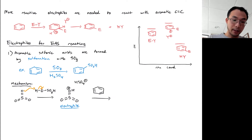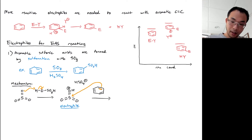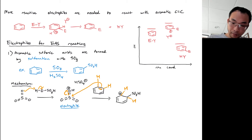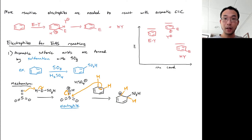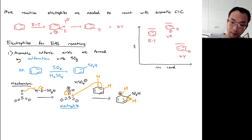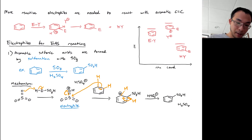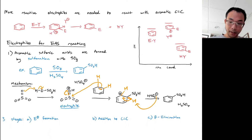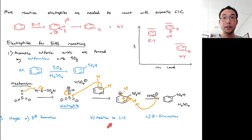Once we have the electrophile, it reacts with the nucleophilic benzene: the pi bond attacks, pushing electron density up to the protonated oxygen of the sulfur trioxide. This gives the arinium intermediate — it's helpful to draw in the hydrogen atoms to keep track of what's happening. From there, our goal is to reform aromaticity by creating a double bond. The electron sink is the positive charge, so our conjugate base comes in to deprotonate the hydrogen in a beta elimination, and that's it. The three stages are: electrophile formation, addition to the carbon-carbon double bond, and beta elimination.